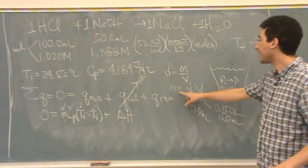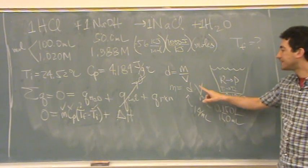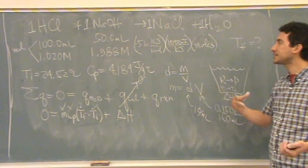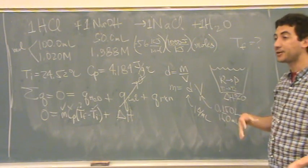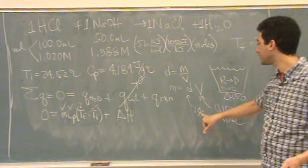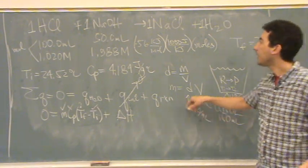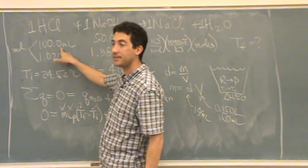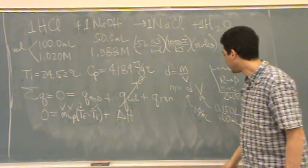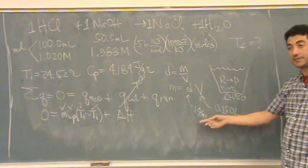Mass — you need to remember — is density times volume. We're assuming a density of water. Whenever you're mixing stuff to do a reaction in aqueous solution, you assume a density of one gram per milliliter. For the volume, I just added what they added: 100 plus 50 is 150 milliliters. So 150 milliliters times one gram per milliliter gives 150 grams.